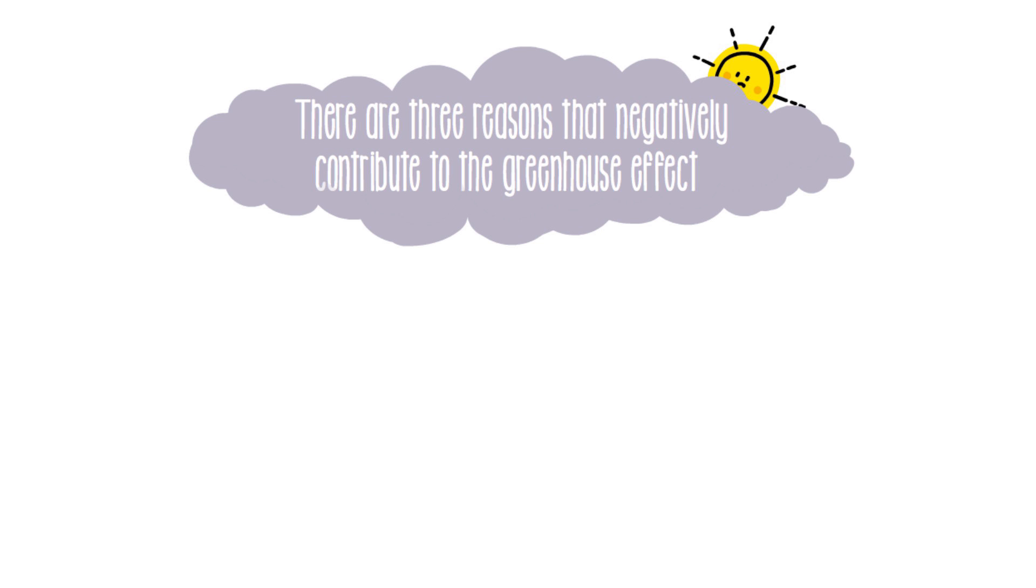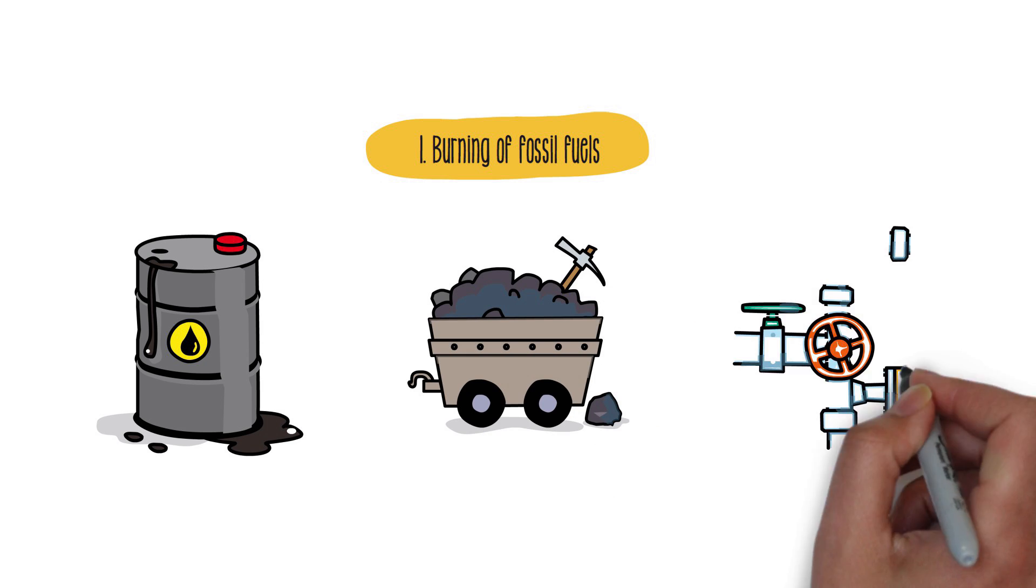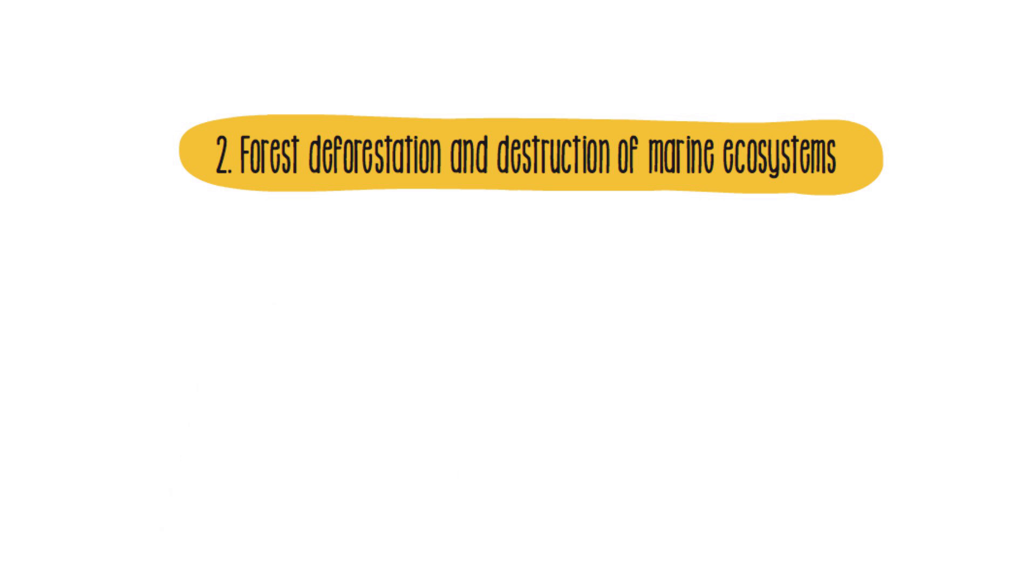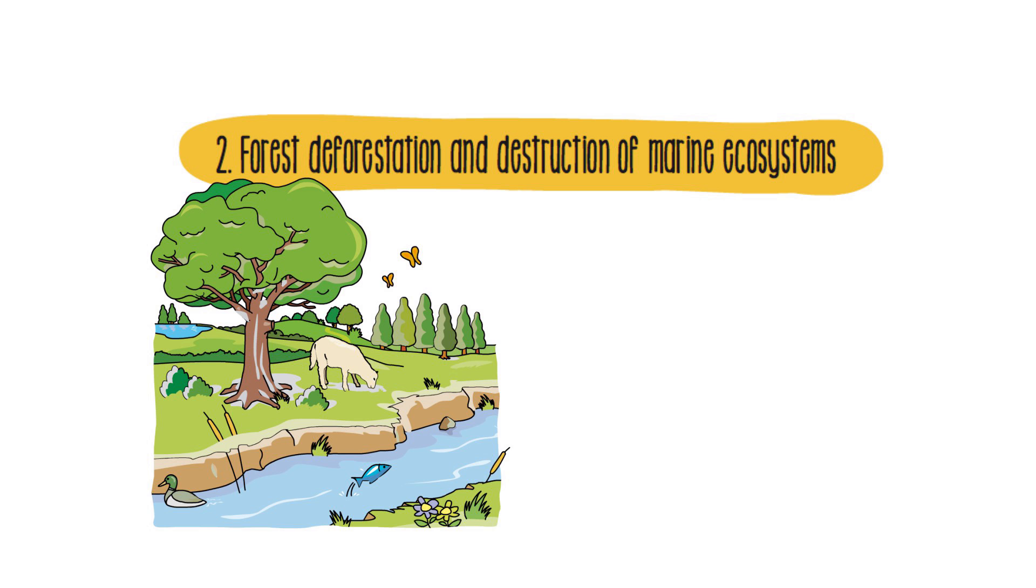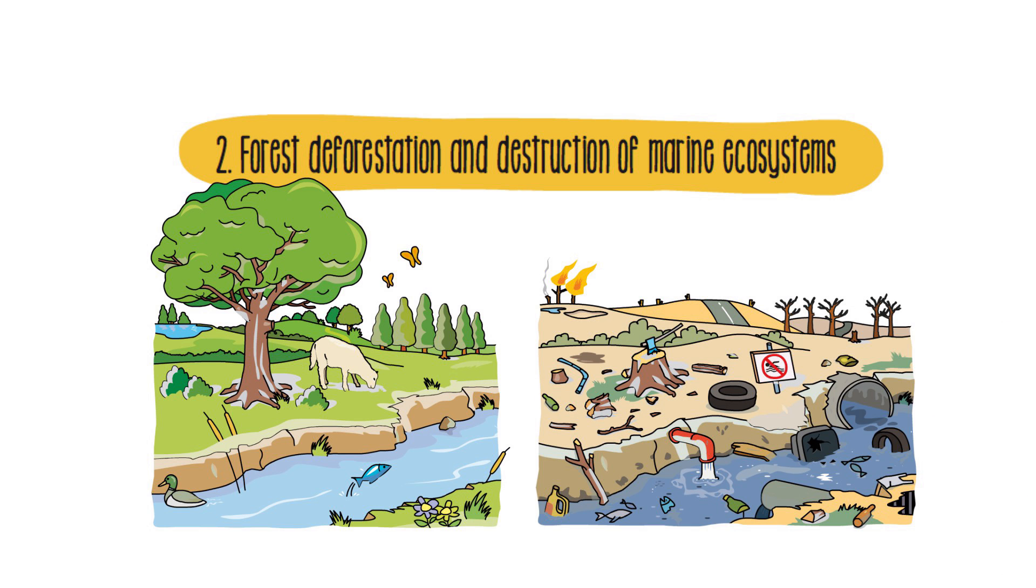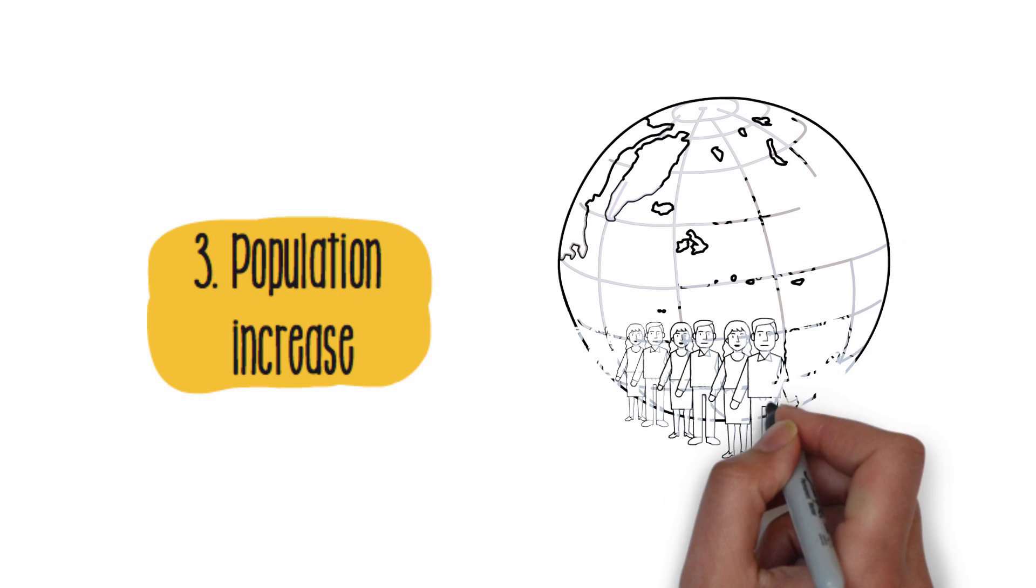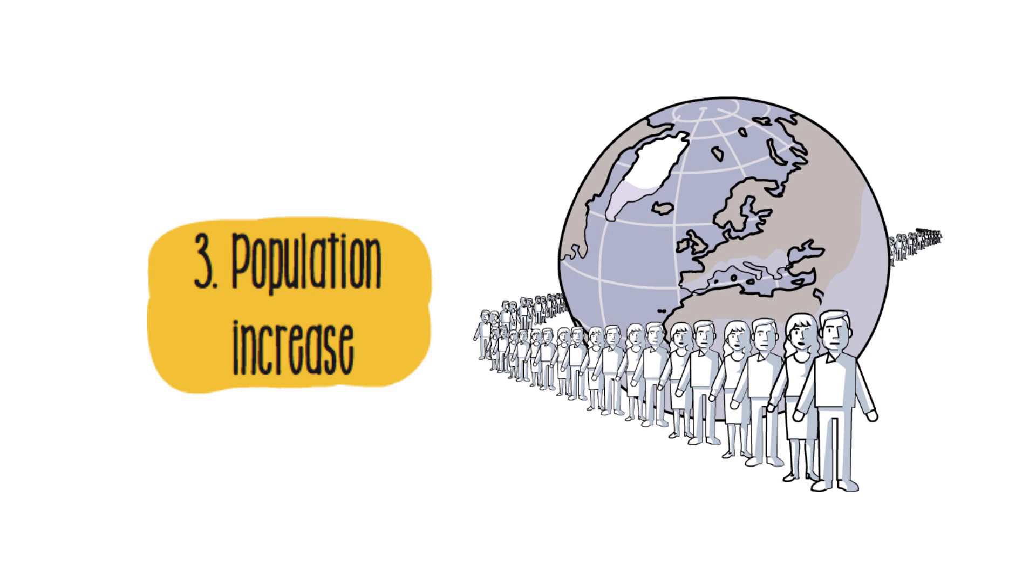Why do greenhouse gases increase? There are three main reasons: the burning of fossil fuels like oil, coal and natural gas, forest deforestation and destruction of marine ecosystems that absorb carbon dioxide, and the increase of a population that increasingly consumes natural resources.